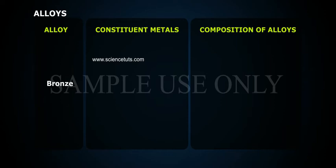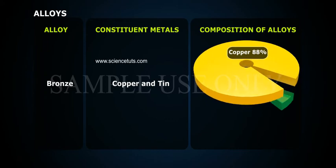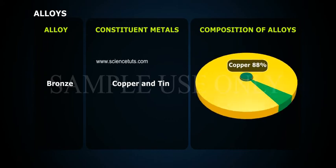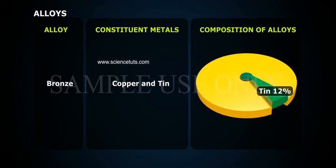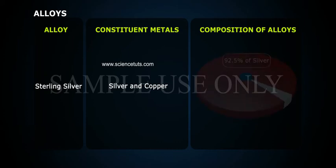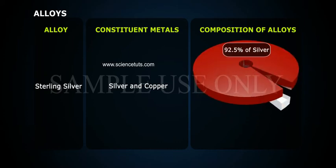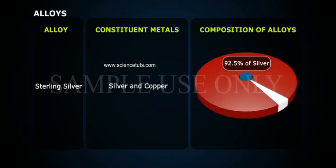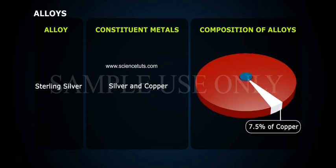Bronze is composed of copper and tin — copper with up to 88% and tin 12%. Sterling silver is composed of silver and copper — 92.5% silver and 7.5% copper.